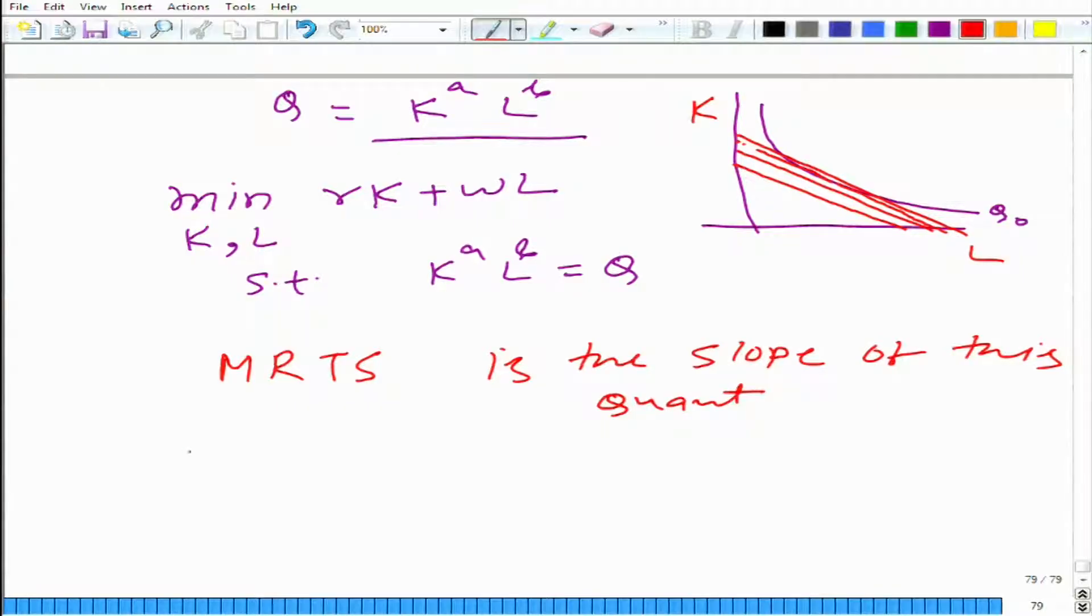First what we can do, this is pure mathematical way. What is the MRTS? This is MRTS, which is the marginal product of labor divided by marginal product of capital. These are the same thing.